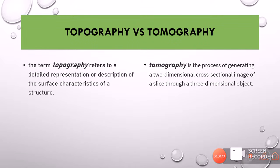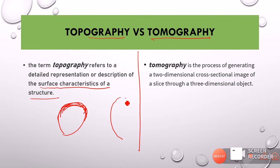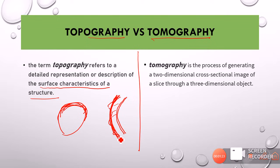Let us first understand the difference between topography and tomography. The term topography basically refers to the representation or description of the surface characteristics of a structure. So if you have a ball, when you are describing the surface of that ball, you are talking about its topography. Similarly, for the cornea — which is a three-dimensional structure with an anterior surface, a posterior surface, and stroma in between — when we discuss just the anterior surface, its elevations and depressions, its regularity and irregularity, we are discussing the topography of the cornea.